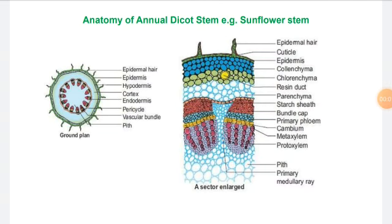Friends, from the previous two lectures, we have discussed about the normal secondary growth. Now in the third lecture, we will go to see the secondary growth in annual dicot stem and perennial dicot stem. The first example is the anatomy of annual dicot stem, and the example is the sunflower stem.